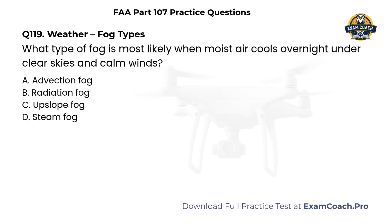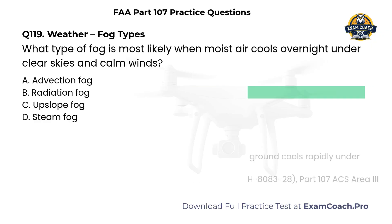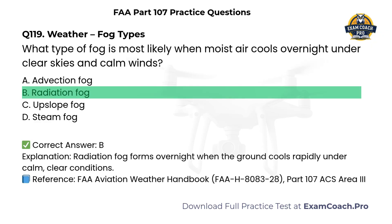Weather. Fog types. What type of fog is most likely when moist air cools overnight under clear skies and calm winds? A. Advection Fog. B. Radiation Fog. C. Upslope Fog. D. Steam Fog. Correct answer: B. Radiation Fog forms overnight when the ground cools rapidly under calm, clear conditions.